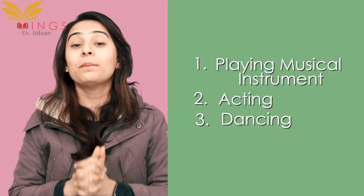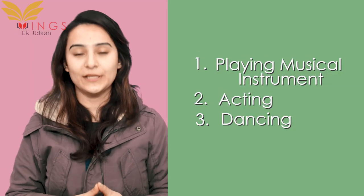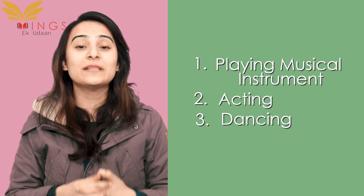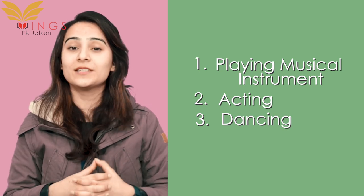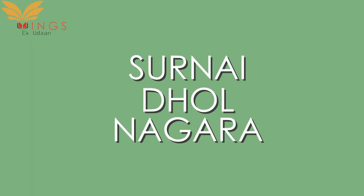The folk theatre has three main components: playing a musical instrument, acting, and dancing. There are three main instruments involved — Surnai, Dhol, and Nagara — and some artists also use Sajay Khashoggi.